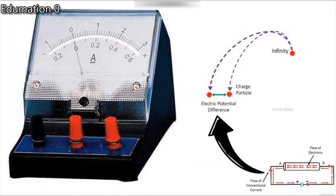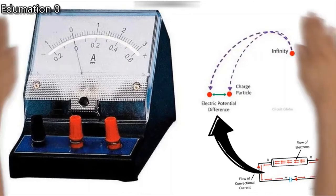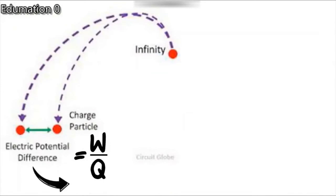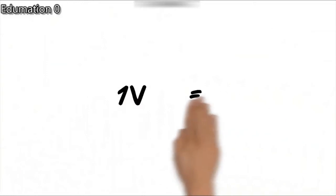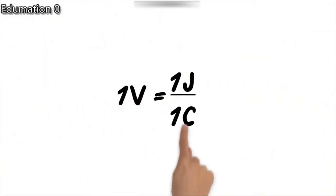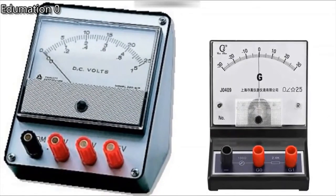An electric current flows because of an electric potential difference V between any two points of a conductor. Potential difference is the work done per unit charge. Potential difference is also called voltage. The SI unit of potential difference is volt (V). One volt of potential difference is one unit of work done to move a charge of one coulomb from one point to another. The instrument used to measure potential difference is called a voltmeter. A galvanometer is the instrument that detects current in an electric circuit.